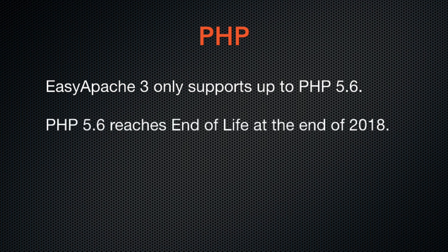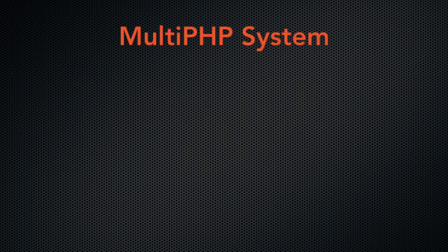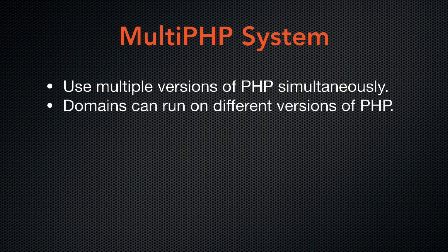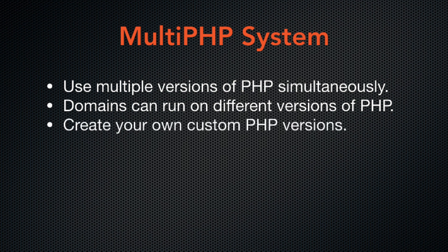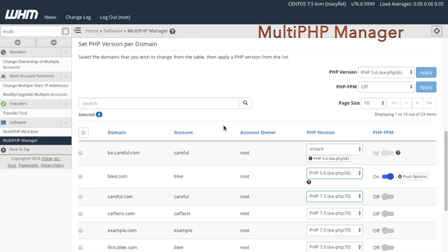Because PHP 5.6 reaches end of life at the end of 2018, you will no longer receive updates and you risk your system's security if you remain on Easy Apache 3. One of the most exciting features of Easy Apache 4 is the ability to use multiple versions of PHP on one system. You can even run your domains on different versions of PHP. Additionally, you can use your own customized versions of PHP if you desire. We've made managing your system's PHP versions easy with the Multi-PHP interface. You can easily switch your domains between different versions of PHP with just the click of a button.